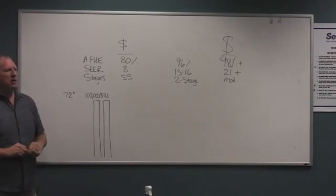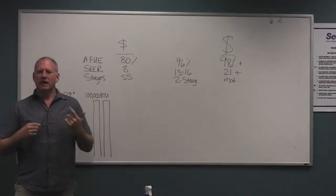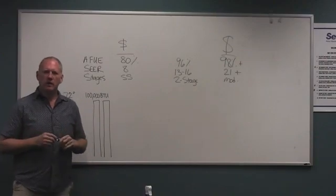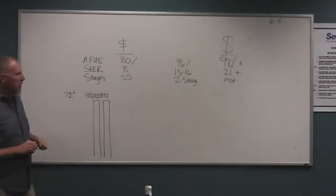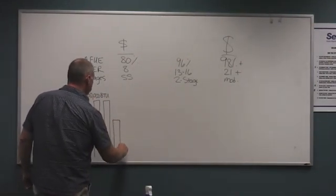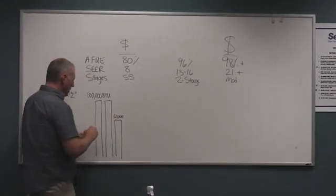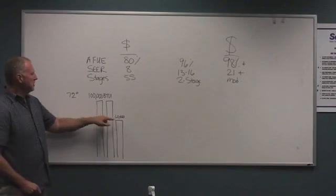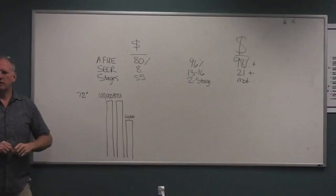First of all, what we've done is we've gone through a load calculation and figured out exactly what the needs are for your home. You don't need a 100,000 BTU furnace. This is actually way oversized for your home. What you need is actually a 60,000 BTU furnace. Right off the bat, we're going to save you a whole bunch of money because every single time your furnace kicks on, instead of kicking on to 100,000 BTU, it's going to kick on to 60,000 BTU.